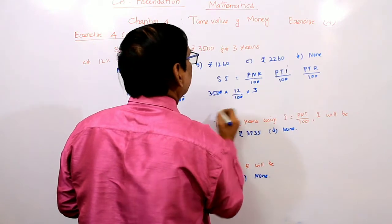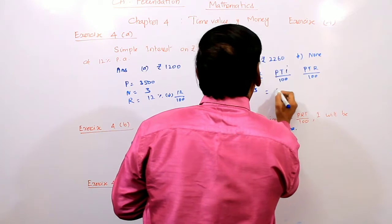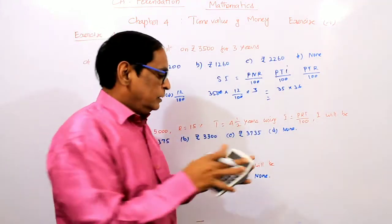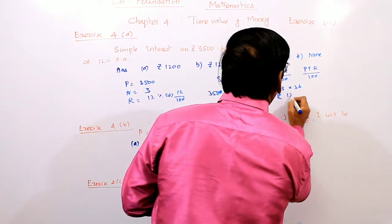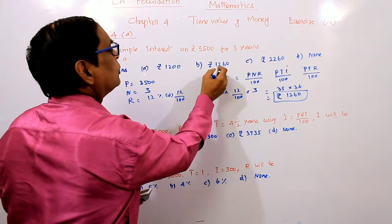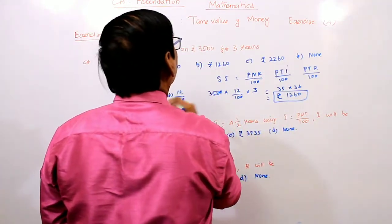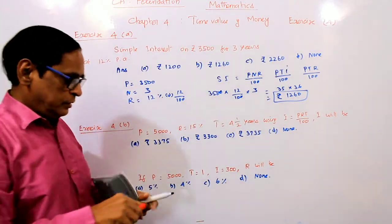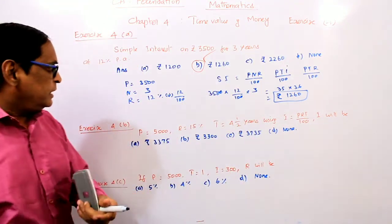35 into 36 gives us 1,260. So the answer is 1,260. That is the answer for this question.